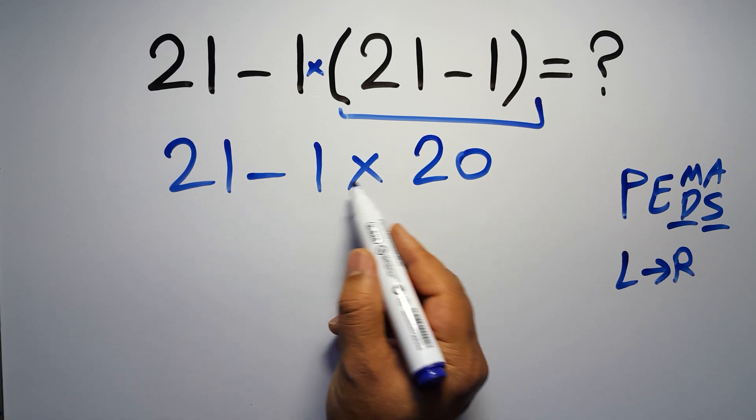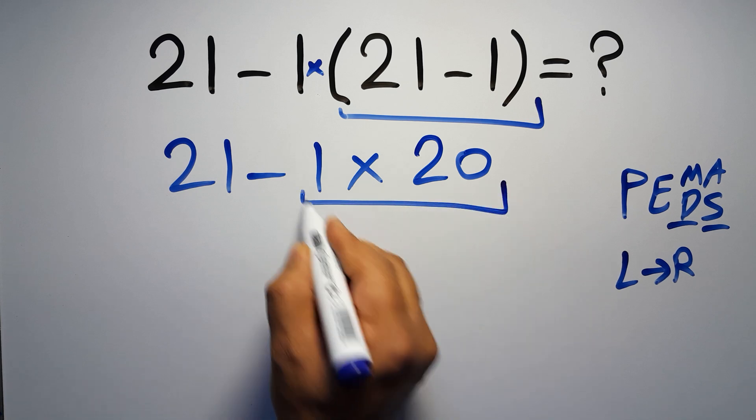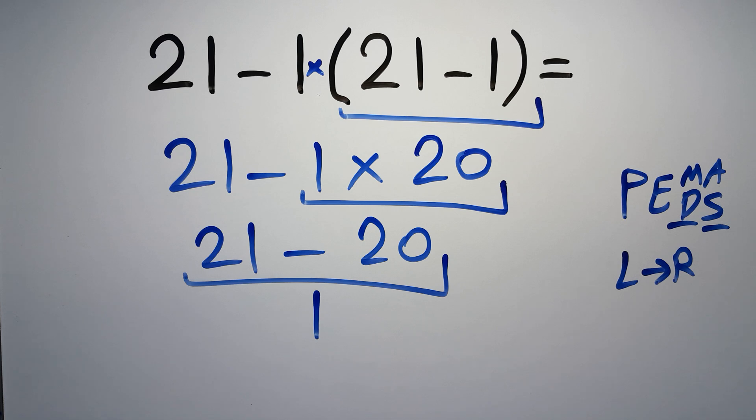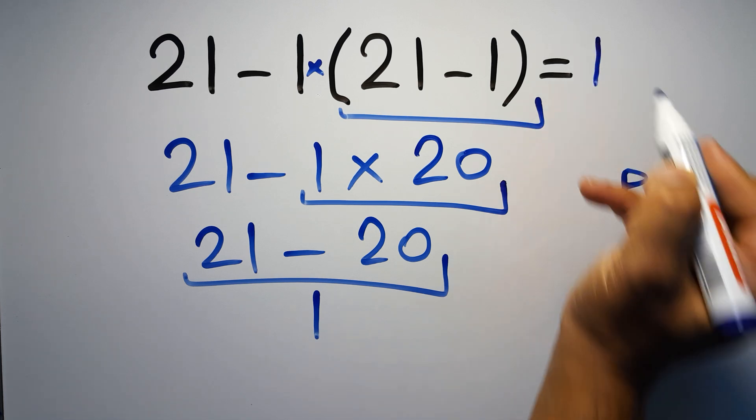So first 1 times 20 which equals 20, so 21 minus 20 is just 1, and this is our final answer to this problem. The correct answer is 1.